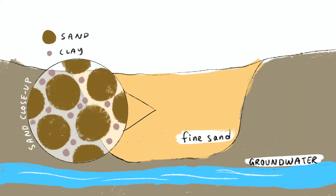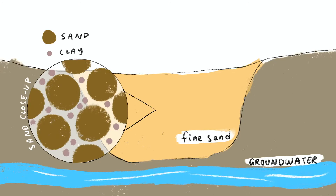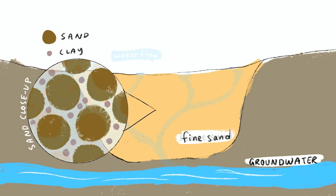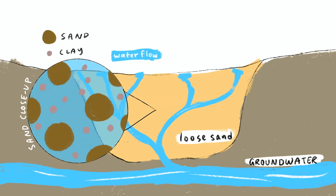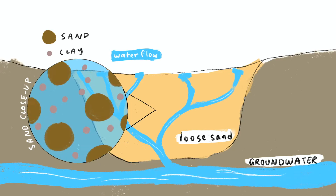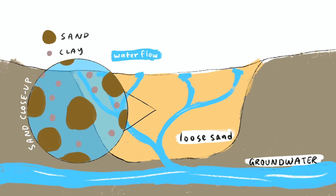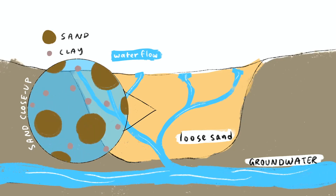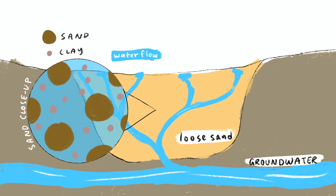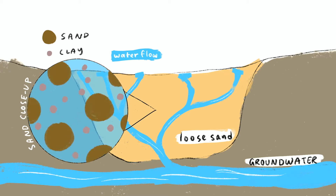Quicksand can form under earthquakes or with groundwater flowing below. The groundwater flows up into the sand and loosens it, but it can keep its shape because the clay and water form a gel that keeps the sand from sedimentation.